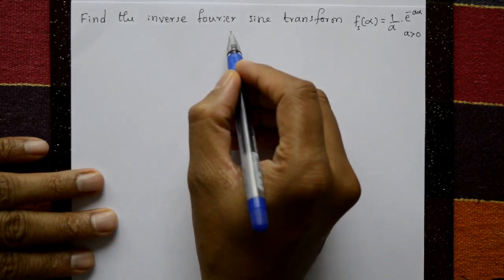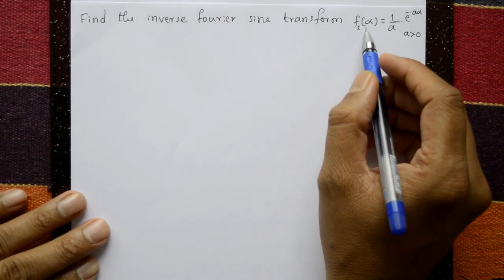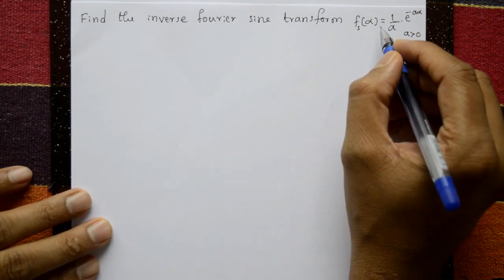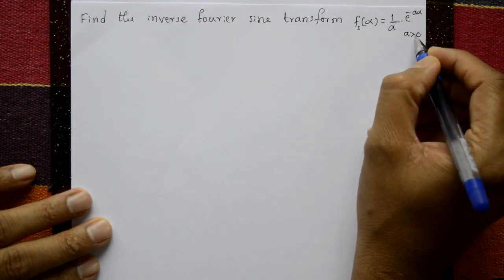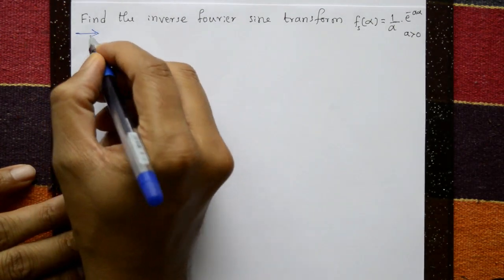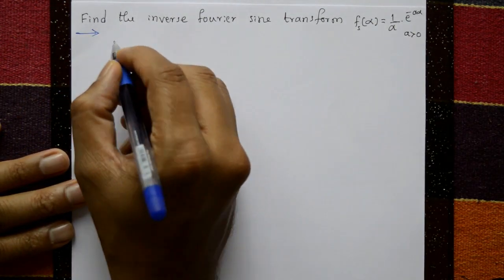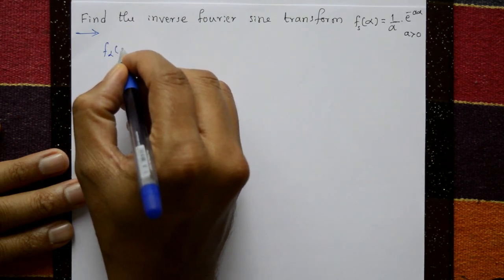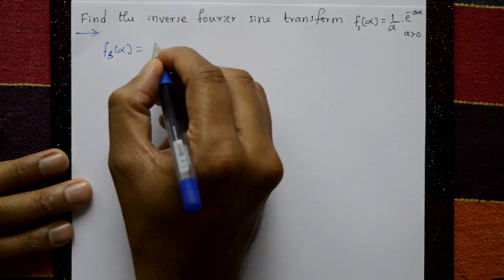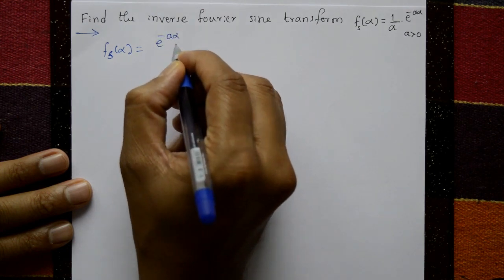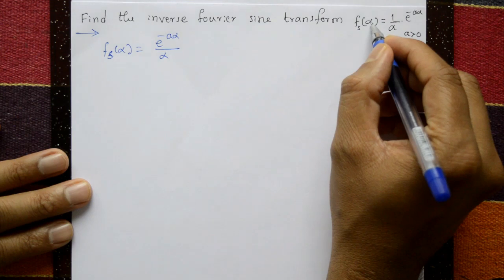Find the inverse Fourier sine transform. F_s(α) is equal to 1/α times e^(−aα), where a is greater than 0. The solution: F_s(α) is given as e^(−aα)/α.